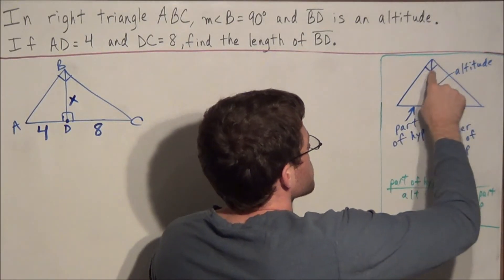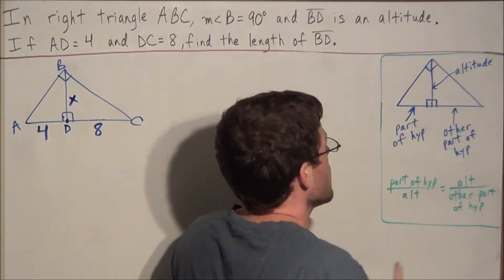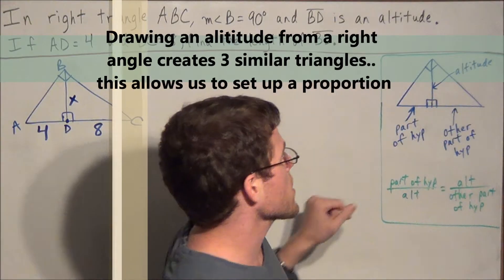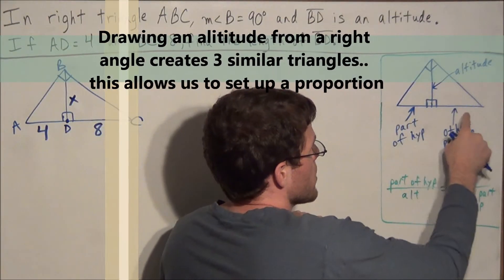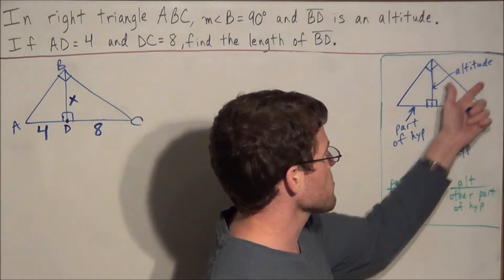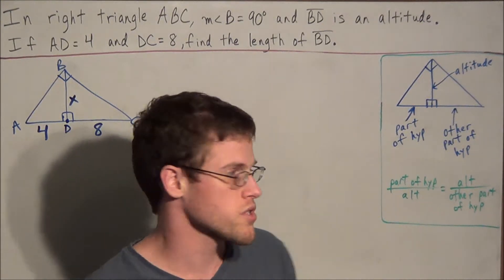and we drop down an altitude from the original right angle. So just to identify different sections, we have the altitude of the triangle, part of the hypotenuse, and the other part of the hypotenuse. And we're going to use these three pieces of information to set up a proportion.